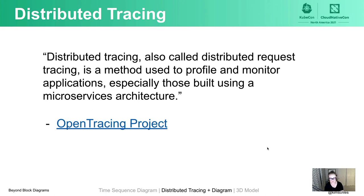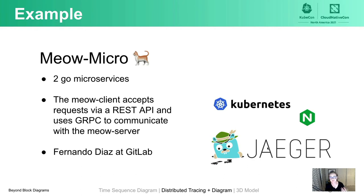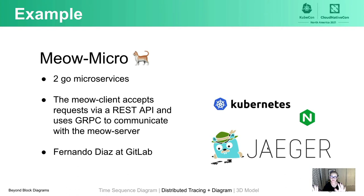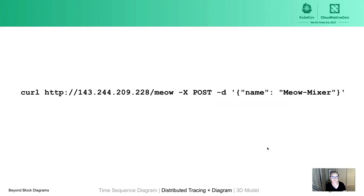I really like distributed tracing tools because of the visuals you get, and I've done a lot of learning by seeing distributed traces in production. The example I'm going to show today: I've deployed a sample application called Meow Micro, which is two Go microservices. There are two parts to the application — the Meow client and the Meow server. The Meow client accepts requests via a REST API and then uses gRPC to communicate with the Meow server. A big shout out to Fernando Diaz at GitLab who published the tutorial and the Meow Micro code I'm using. We have a Kubernetes cluster with an Nginx ingress so traffic can enter the cluster. Jaeger, starting at Nginx, actually traces the request as it gets to the server.